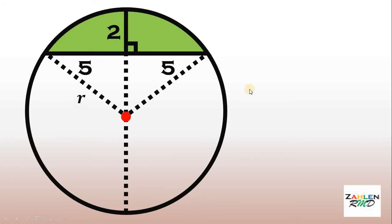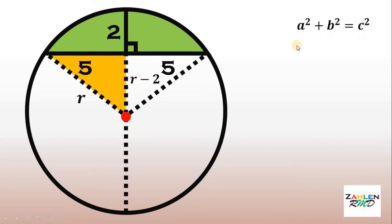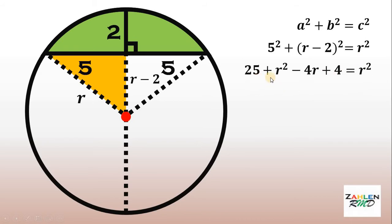Let the radius be equal to r. It follows that this segment must be equal to the length of the radius minus 2, or simply r minus 2. Now, consider this right triangle. Using the Pythagorean theorem — a squared plus b squared equals c squared — we get 5 squared plus (r minus 2) squared equals r squared.